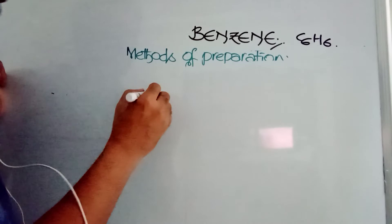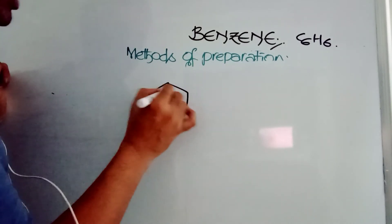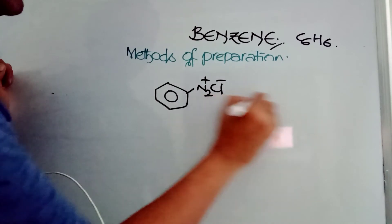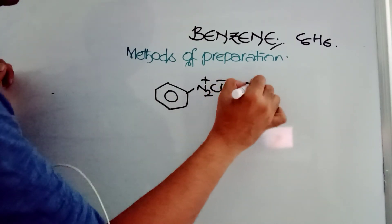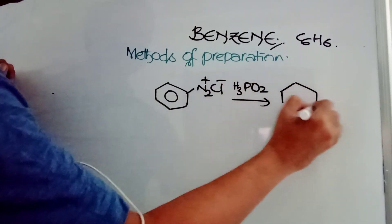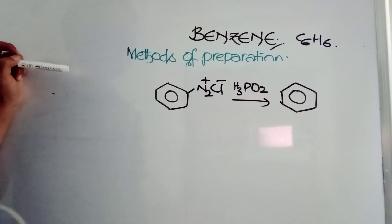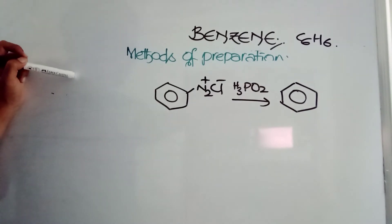We can prepare benzene from benzene diazonium chloride. N2 plus Cl minus benzene diazonium chloride treated with H3PO2. It is a reduction. You are getting your benzene from benzene diazonium chloride by reduction with H3PO2. This is again one very special reaction.